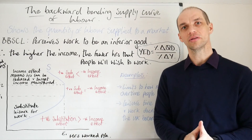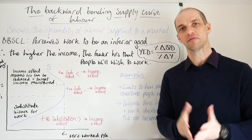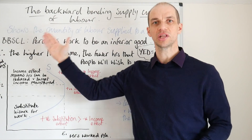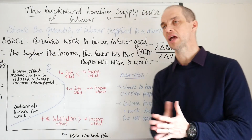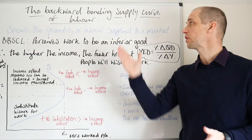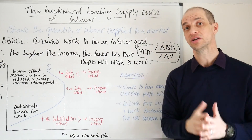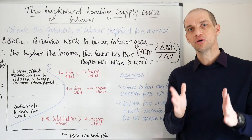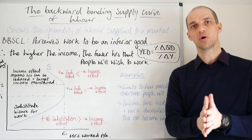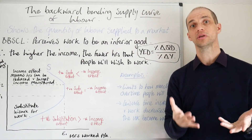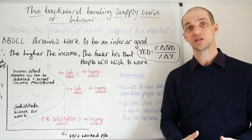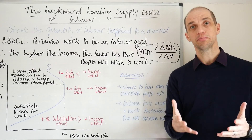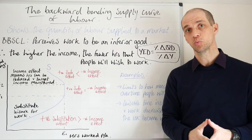Hi everyone. Let's take a look at the backwards bending supply curve of labour. Before we do that, we're just going to understand exactly what the supply curve of labour is. Very simply, it shows the quantity of labour supplied to a market at a given wage rate. Remember firstly that we're dealing with labour as a derived demand, so the demand is provided by the businesses that employ the workers and the supply is provided by people that actually want to work.